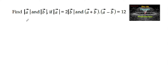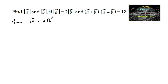Find vector a mod and vector b mod if mod a is equal to 2 times mod b, and a plus b dot a minus b is equal to 12. So given: mod a is equal to 2 times mod b, and also a plus b dot a minus b is equal to 12.